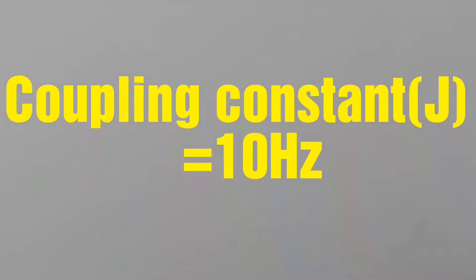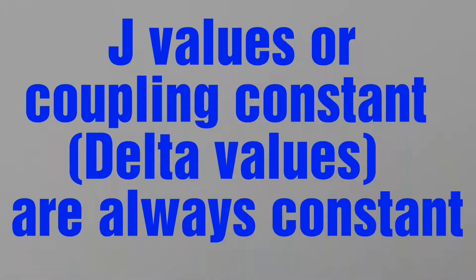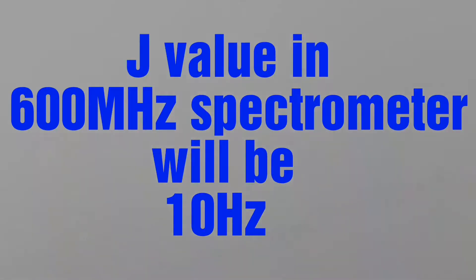Remember, the coupling constant is 10 Hz. The coupling constant, or J-value, always remains constant. So, the J-value in a 600 megahertz spectrometer will be 10 Hz.